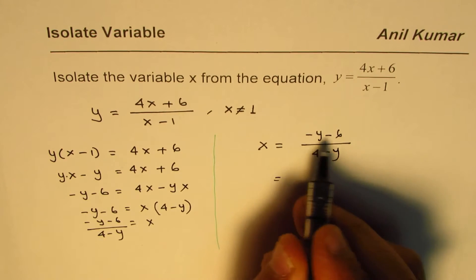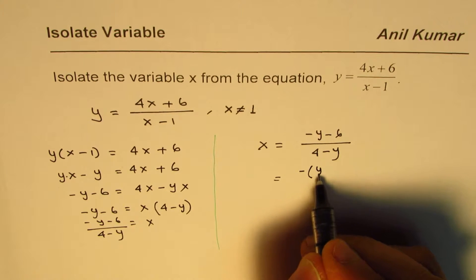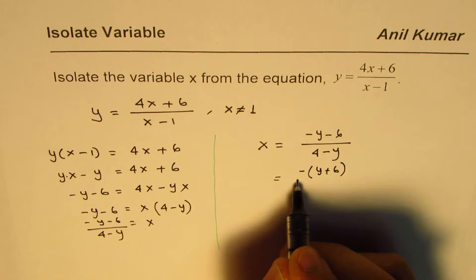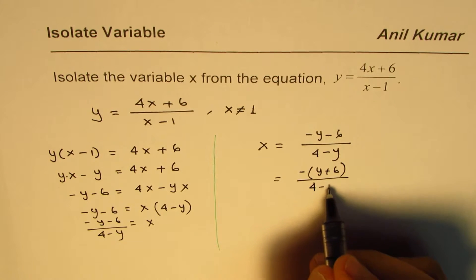Let me take minus common in the numerator. If I take minus common, I'll get y plus 6, and here we get 4 minus y.